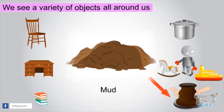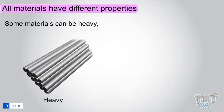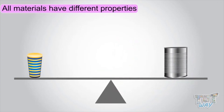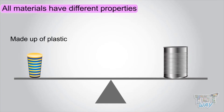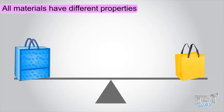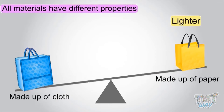All materials have different properties. Like some material can be heavy, some can be light. If you have two tumblers, one made of plastic and one made of steel, the one made of plastic would be lighter. If you have two carry bags, one made of cloth and one made of paper, the one made of paper would be lighter than the one made of cloth.